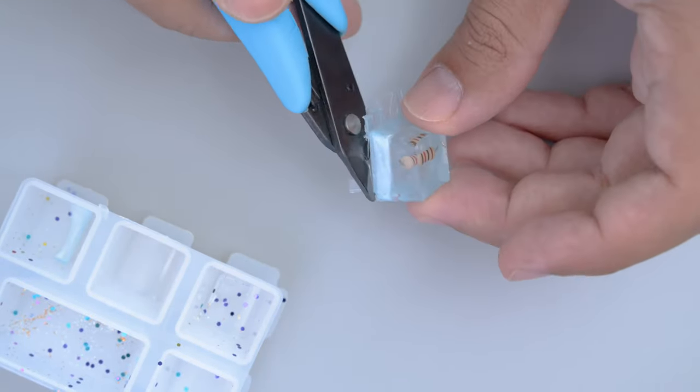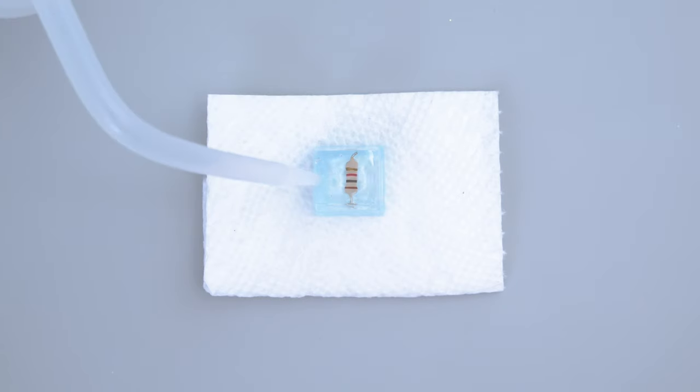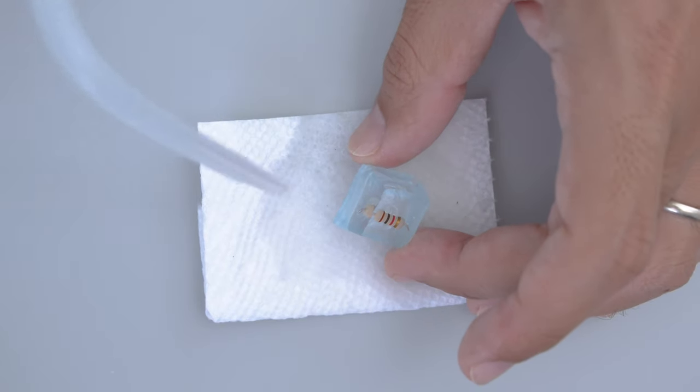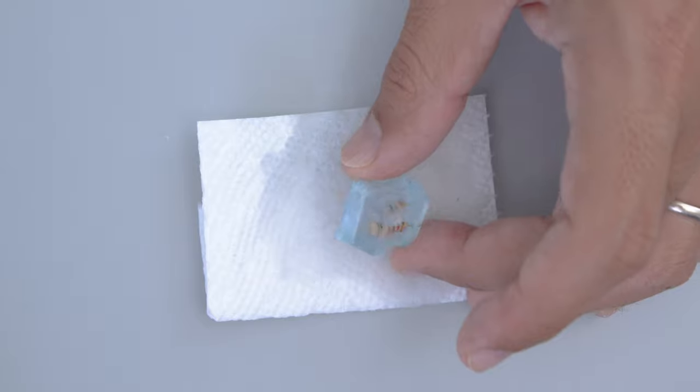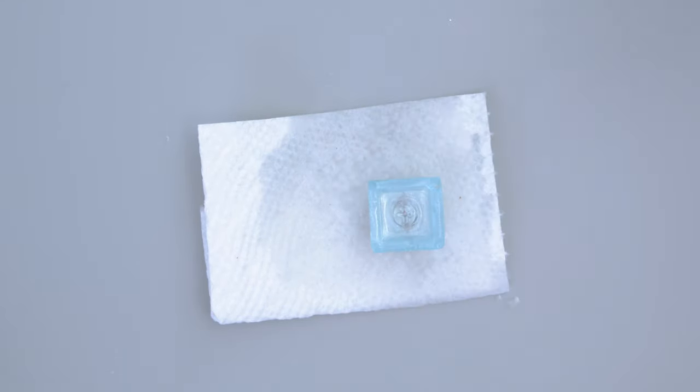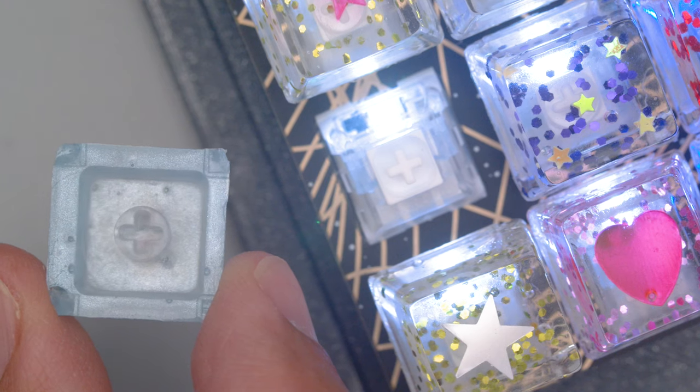You'll find the surface is a bit tacky, so you can use some alcohol to remove the stickiness. We have the keycap over a paper towel and a squirt bottle to make it easier to apply. You'll want to apply alcohol to all of the surfaces, and there you have it!